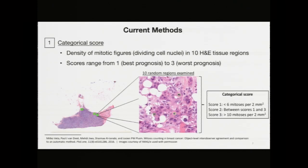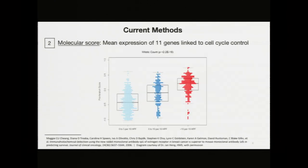Current methods for assessing tumor proliferation are both categorical and molecular in nature. The categorical score is defined as the mean number of mitoses over 10 randomly-sampled tissue regions in the slide, and these scores can range from 1 to 3, where a higher score indicates a worse prognostic outcome. You can see the procedure for identifying tumor proliferation where we select 10 random regions, count the number of mitoses over those regions, and make a prediction. This is the procedure that pathologists currently use.